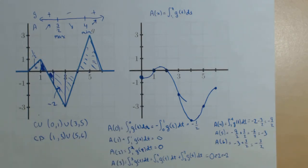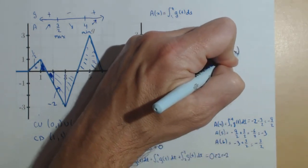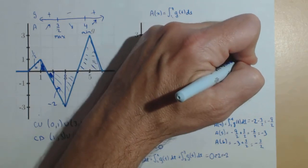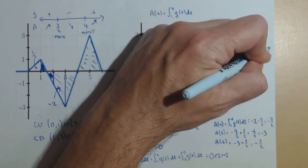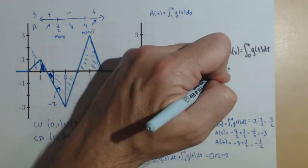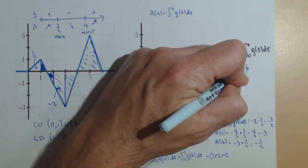Now, what if we were to change this to be A of x equals 0 to x of g of t dt. And I'll do this in this other color. Well, right off the bat, A of 0 is going to be from 0 to 0. So, A of 0 is 0.